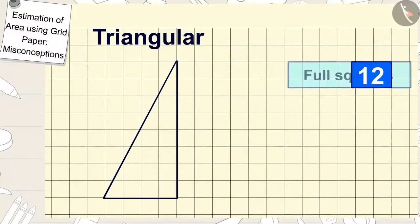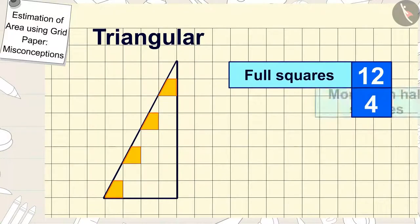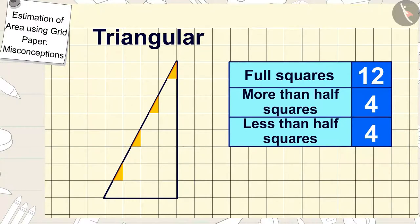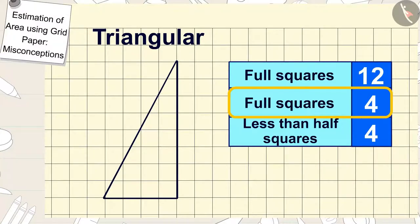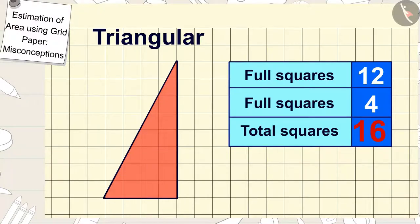There are twelve full squares in the area of the triangle shaped plate. There are four more than half squares and four less than half squares. So, we will count four more than half squares as four full squares. And we don't count the less than half squares. In this way, there are sixteen squares in the area of the triangle shaped plate.